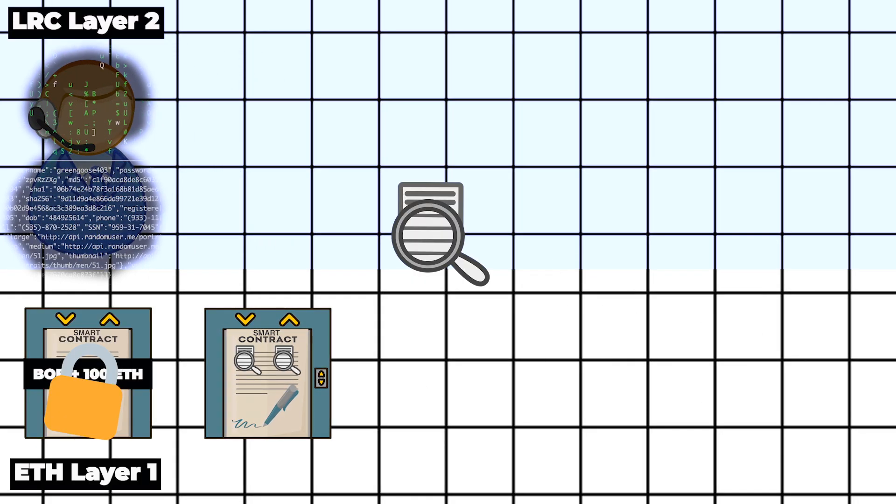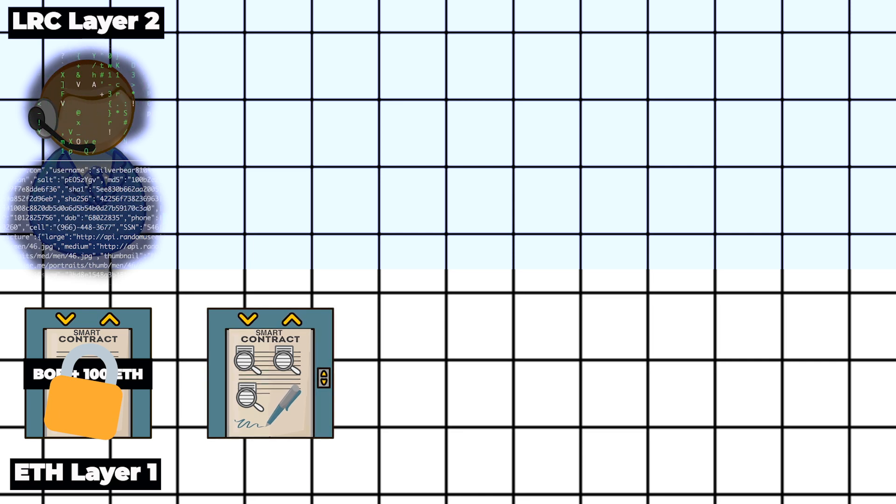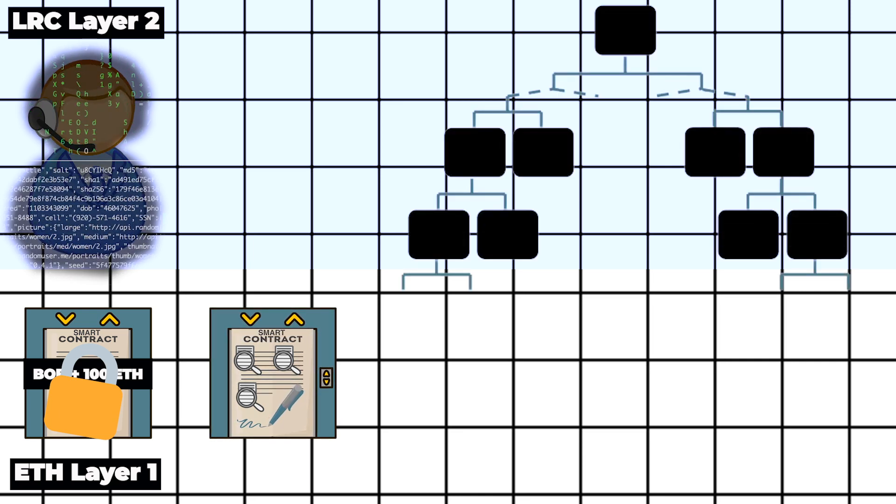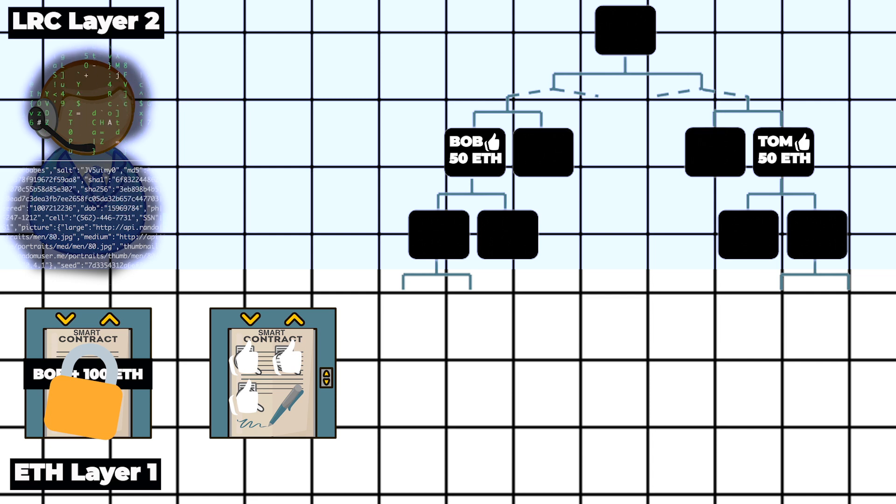Once generated, it is submitted to a Loopring smart contract on the Ethereum blockchain. Your balance on the Merkle tree will be updated only after the smart contract verifies the submitted cryptographic proof and gives it a thumbs up. Since the smart contract is open source code deployed on the Ethereum blockchain...